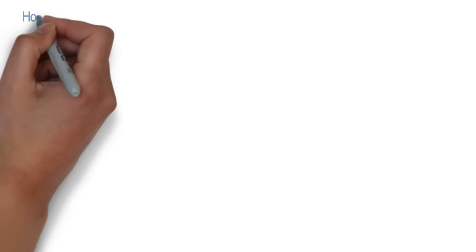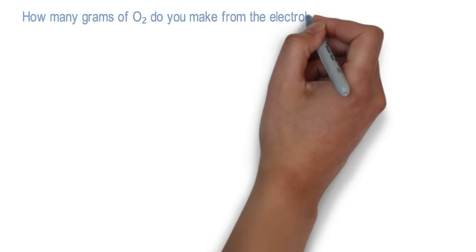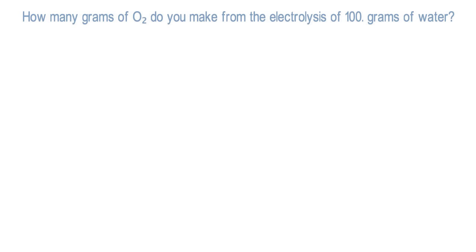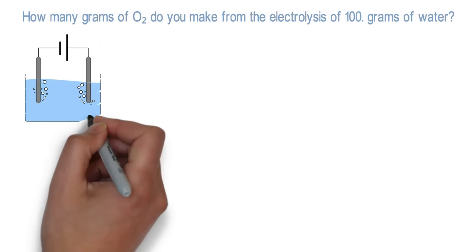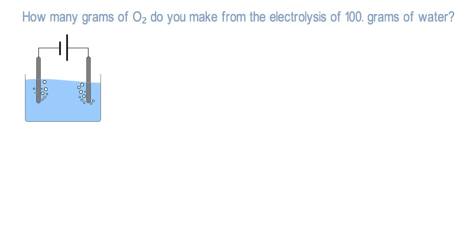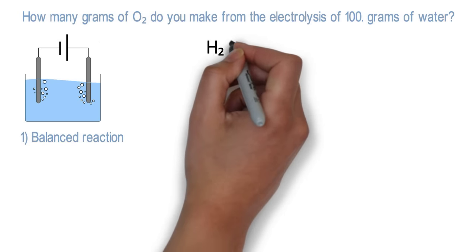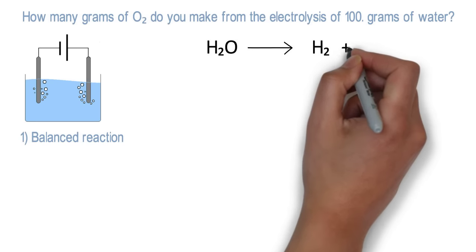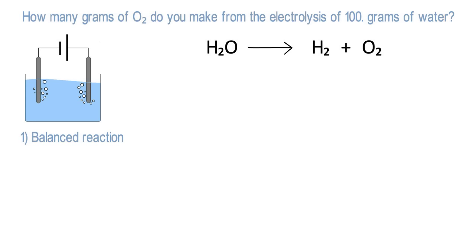Let's try this now with a chemical reaction. How many grams of oxygen do you make from the electrolysis of 100 grams of water? The electrolysis of water is a decomposition reaction in which water breaks down into its elements, oxygen and hydrogen. Because the reaction needs a continuous supply of electricity, it is an endothermic reaction. The first thing we need to do is write down the balanced reaction. H2O breaks down to form H2 and O2. Both hydrogen and oxygen are diatomic elements. The oxygen is not balanced with 1 on the left and 2 on the right, so we put a 2 in front of H2O. That makes 4 hydrogens on the left, so we put a 2 in front of H2. The reaction is now balanced.